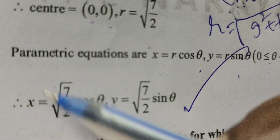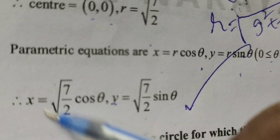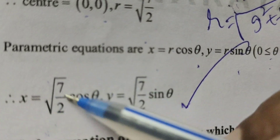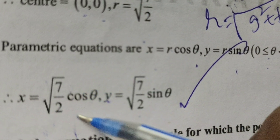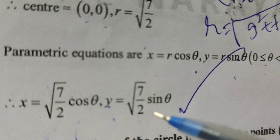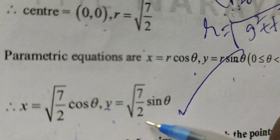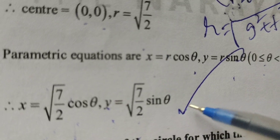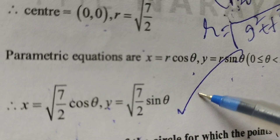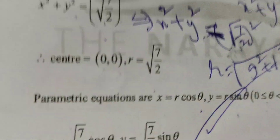Hence, the required parametric equations are: x equals root of 7 by 2 cosθ, y equals root of 7 by 2 sinθ. Thank you.